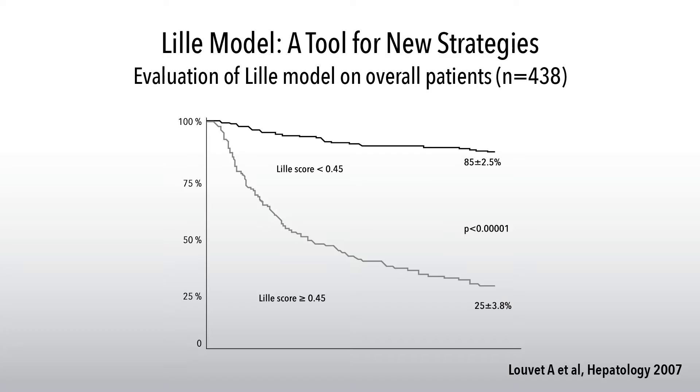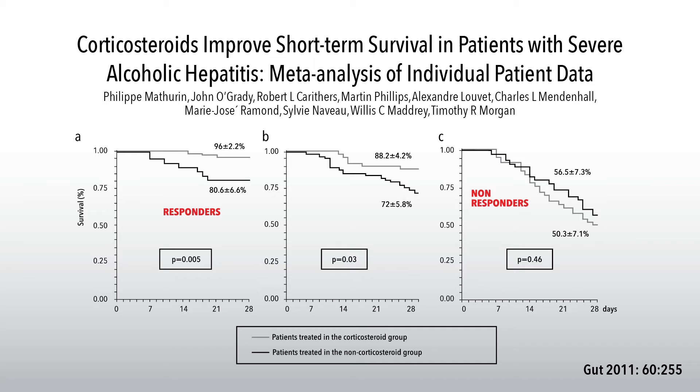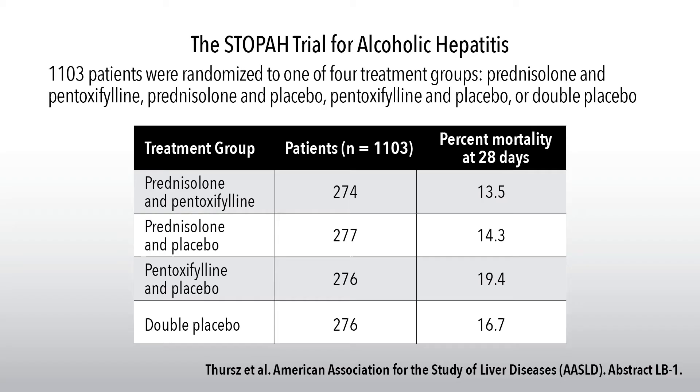The LEAL score using the 0.45 cutoff shows significant survival differences between responders and non-responders. Non-responders showed no benefit from steroids at 28 days. Make sure you exclude SBP — do a paracentesis on all patients with ascites to rule out infection. Prophylaxis with a fluoroquinolone such as ciprofloxacin or levofloxacin is an option. Treat infections aggressively if present, including UTIs, pulmonary infections, and bacteremia.